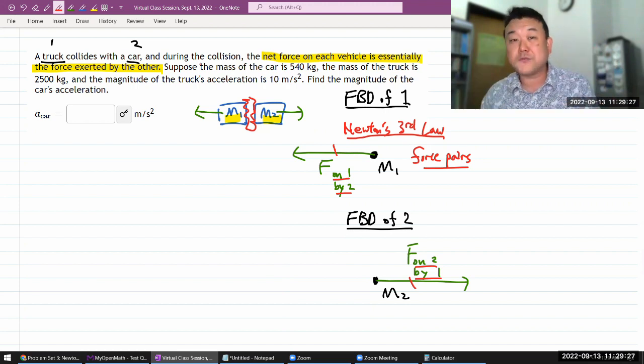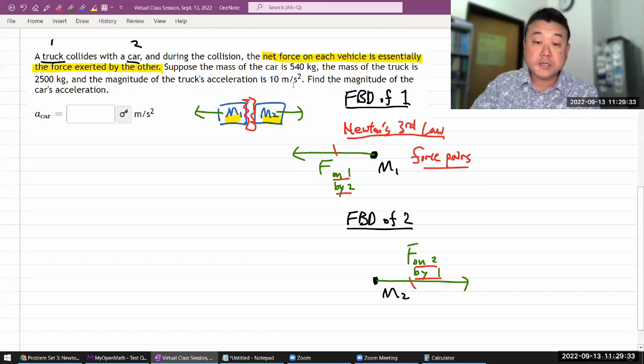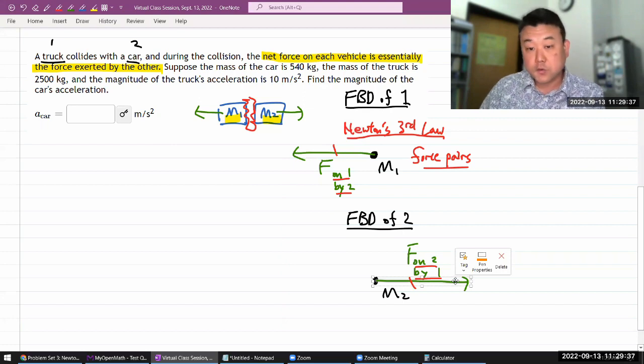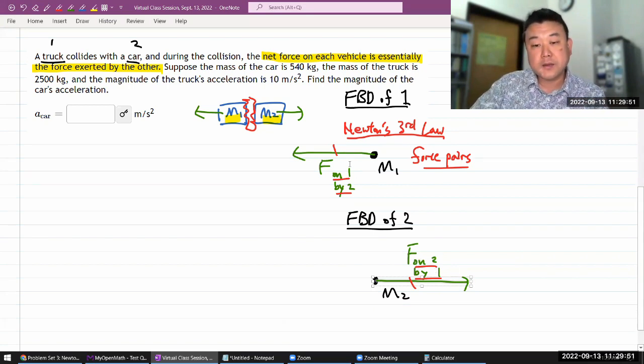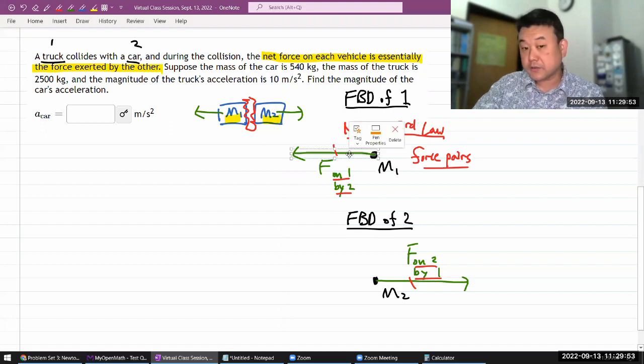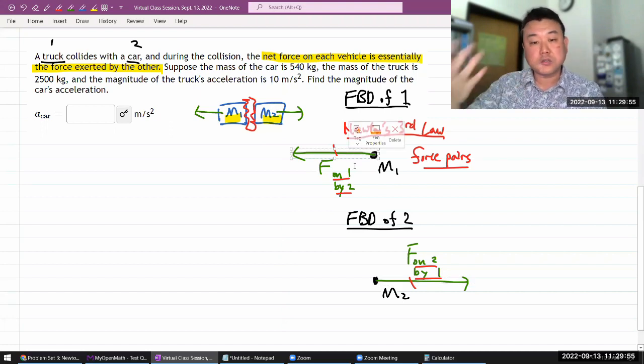You get tricked by that equal and opposite wording of the simplified version and you start looking for equal and opposite forces. That's the totally wrong way to use Newton's third law. The way you use Newton's third law is you identify the forces that are action-reaction force pairs, because you can see that they are related to each other in the interaction.